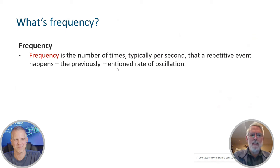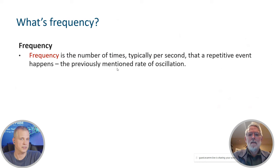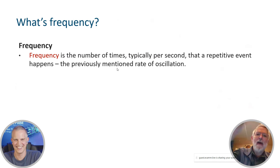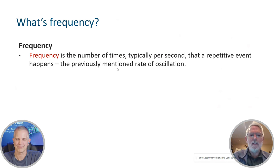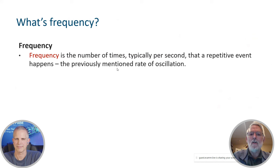Talking about frequency — what is it? It's the number of times, typically per second, that a repetitive event happens. It's independent of RF or sound. I can wave my hand back and forth and assign a frequency to that. That's one hertz if I do it once per second. Frequency is that number of times a repetitive event happens, usually per second, and that is called a rate of oscillation.